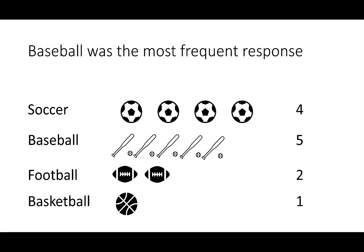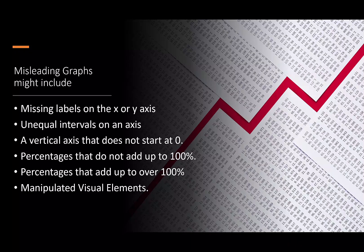Because the baseball and bat are smaller in width than the soccer ball, it makes it appear that soccer occurred more often. This is an example of manipulated visual elements.